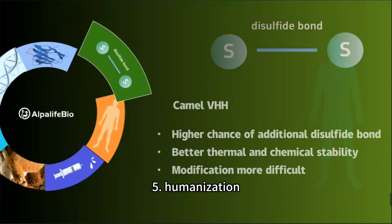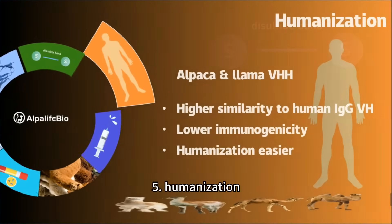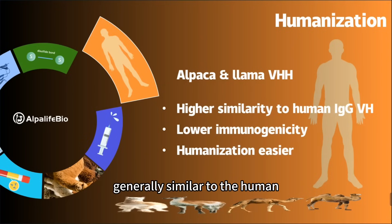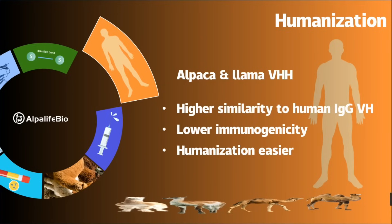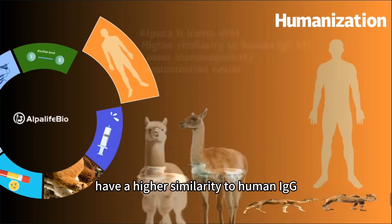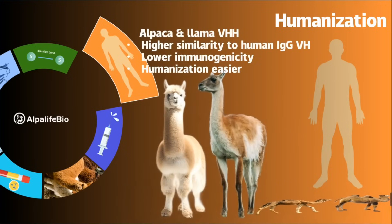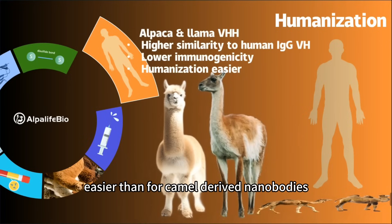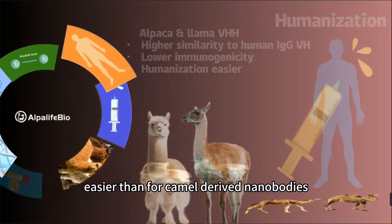5. Humanization: The framework region of nanobodies derived from camelids is generally similar to the human IgG VH domain. Nanobodies from alpacas and llamas have a higher similarity to human IgG, leading to lower immunogenicity and making antibody humanization easier than for camel-derived nanobodies.